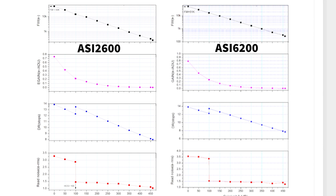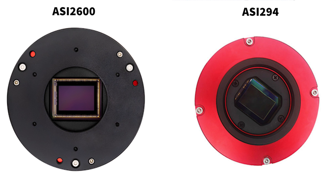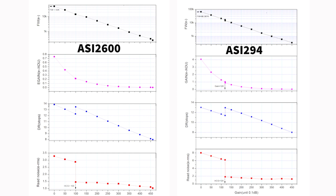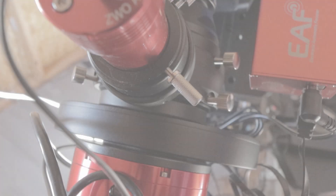The pixel size, quantum efficiency — it's all really the same except that the 2600 is smaller and of course much less expensive. Now for a bigger contrast comparison, let's go the other way and look at the 294. The 294MM Pro is a much smaller sensor — it's a 4/3rds size sensor — and I think the biggest difference between the two cameras is that the 2600 has that native 16-bit ADC which will give you a much better tonal resolution than the 294's 14-bit ADC. The full well on the 294 is actually 66k compared to the 50k of the 2600. The DR stops are about the same at 13.5 when you're at unity gain, and the read noise is a little bit better on the 2600.